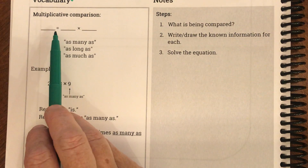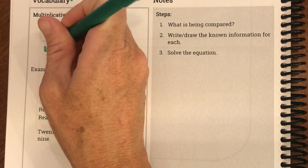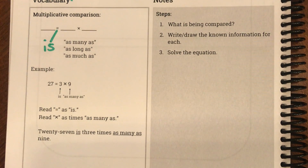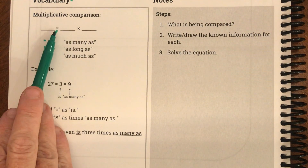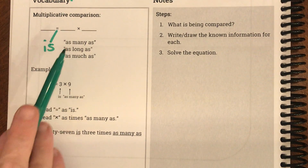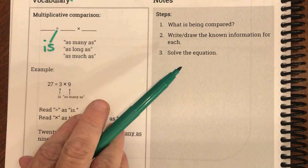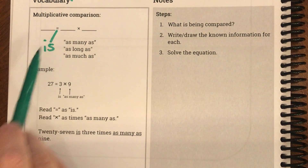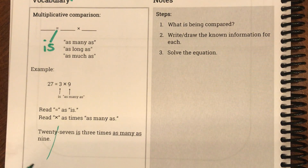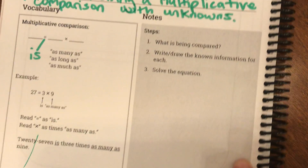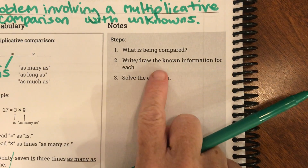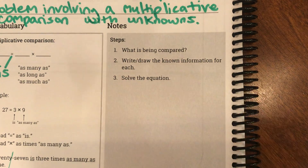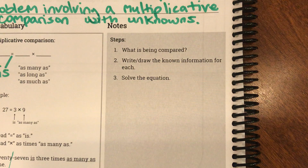Just a reminder, the equal sign we say is 'is.' So I could say '10 feet is two times as long as five feet.' That makes sure we have the 'is' for our equal sign. Let's look at our steps: what is being compared, write or draw the known information for each, and then solve the equation. I'm going to jump in and get started so you can see what these look like.